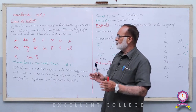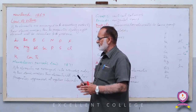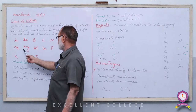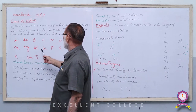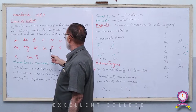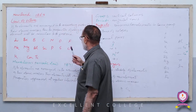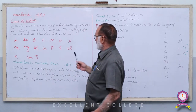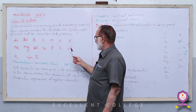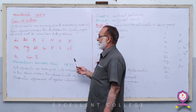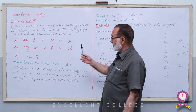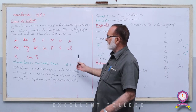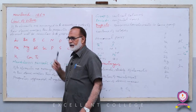دوسرا Octave Sodium سے شروع ہوتا ہے: Na, Mg, Al, Si, P, S, Cl — ساتواں Chlorine ہے۔ آٹھواں element Potassium آئے گا — ہم نے Potassium کو پھر Lithium کے نیچے لکھا، کیونکہ Potassium will also show similar properties to that of Lithium and Sodium۔